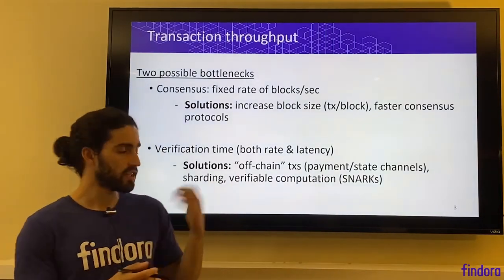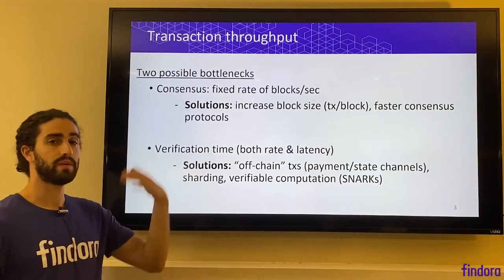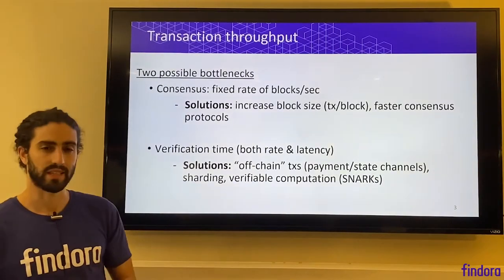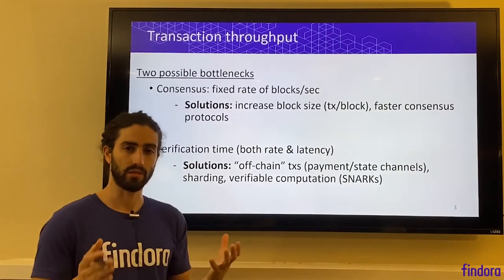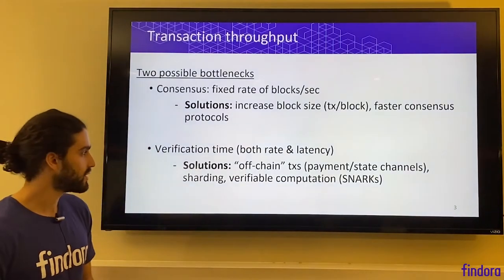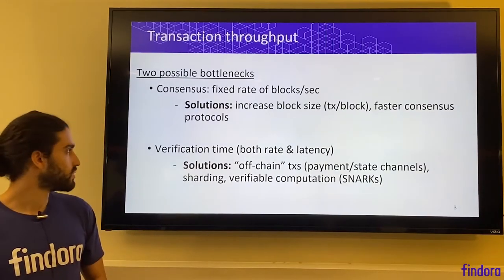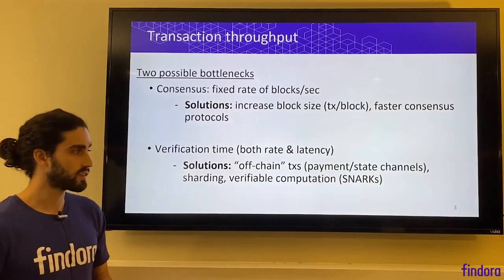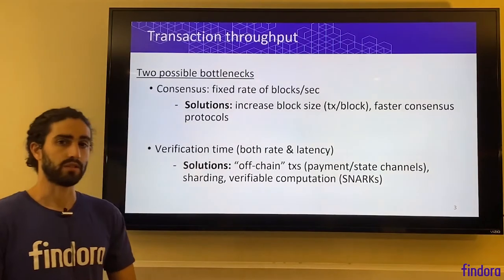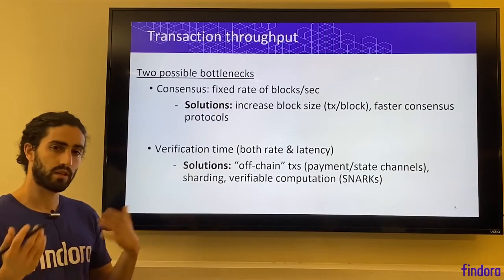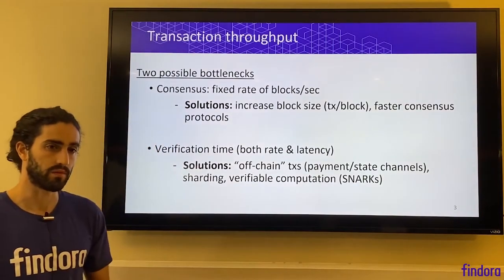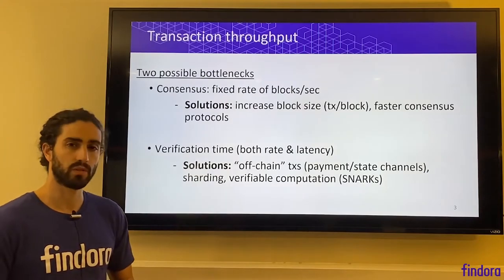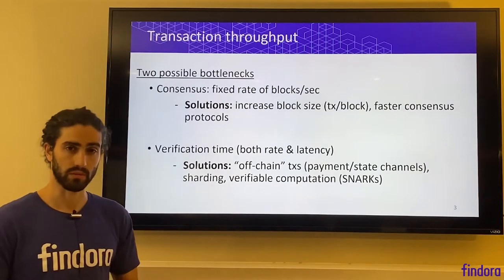Another possible bottleneck is verification time. This has nothing to do with agreement among multiple validators — it just has to do with the raw time that it takes to actually process the transactions. This can present a bottleneck equally for a blockchain database run by a single validator or when there are multiple validators. Solutions for scaling the verification time include concepts we'll discuss in this lecture, such as off-chain transactions — these are payment and state channels. Sharding, which is the technical term for dividing the work of validating transactions or splitting the database into multiple smaller parts each of which are easier to deal with. As well as verifiable computation, which is a powerful tool from cryptography.